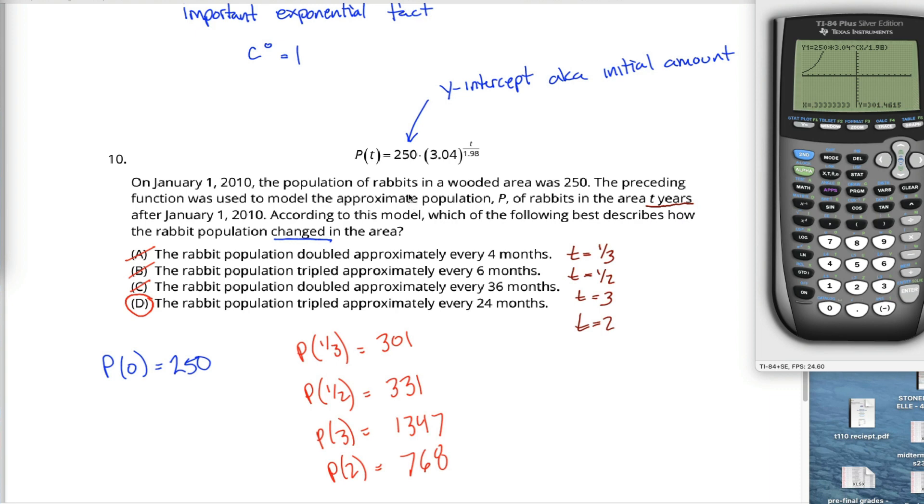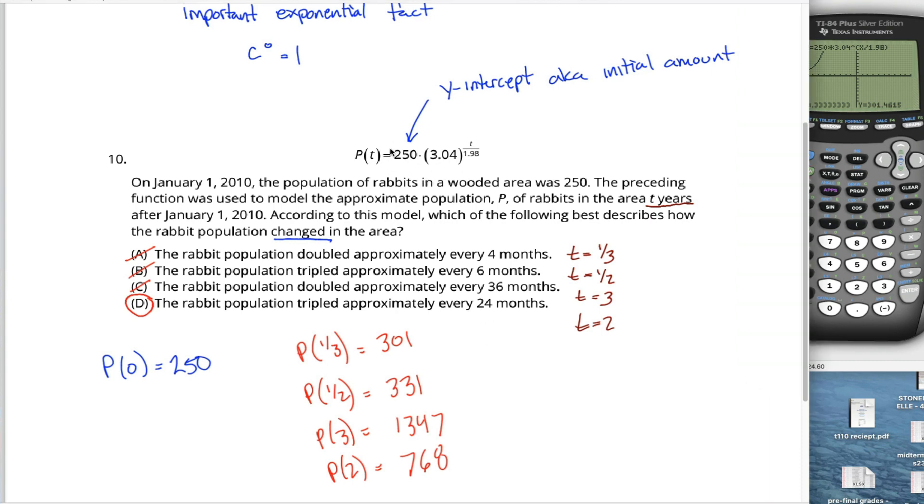The only thing I want to add before ending this video is it would be possible to answer this question without doing any of these calculations at all. If you sort of think about how exponential functions work, we already talked about how this 250 is my Y-intercept, my kind of initial amount. And then the idea is every time my exponent increases by 1, that initial amount, the 250, gets multiplied by 3.04.